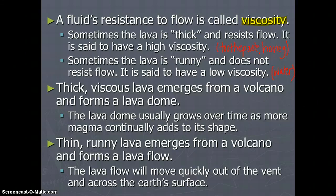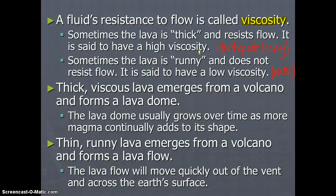The first thing we need to know is a new term called viscosity. A fluid's resistance to flow is called viscosity. Depending on how something flows, it can have a high viscosity or a low viscosity. Sometimes lava is thick and resists flowing — it doesn't flow very easily — and this is said to have a high viscosity. Other things that have a high viscosity are things like toothpaste and honey — they are really thick and gooey and move very slowly.